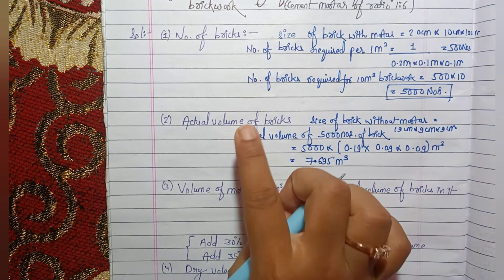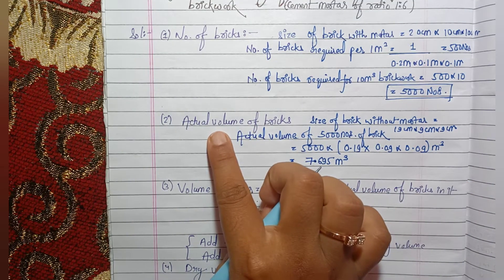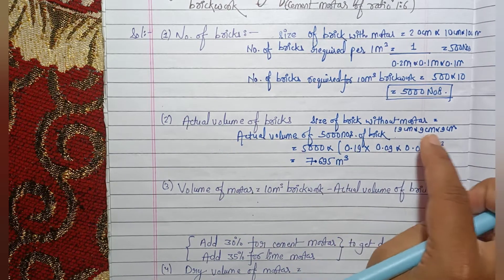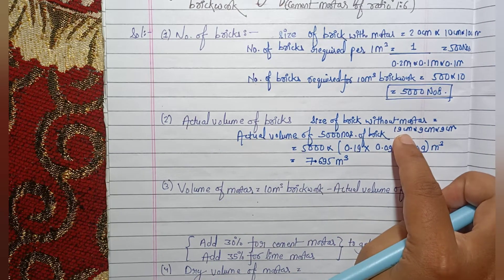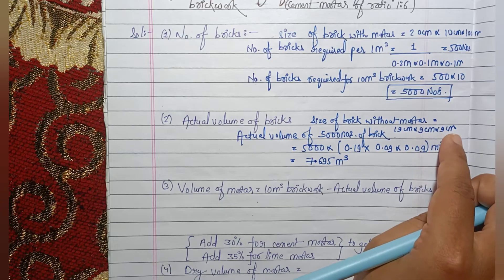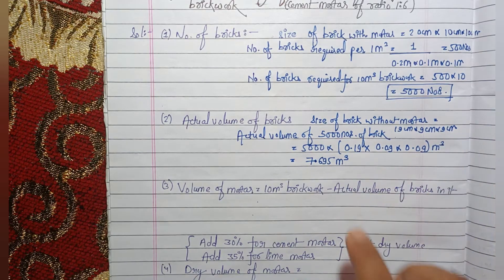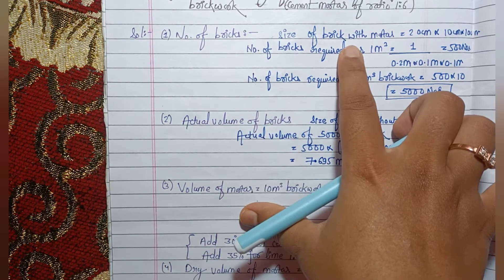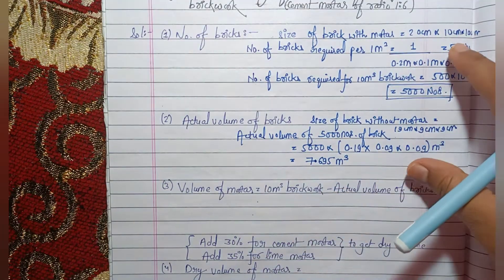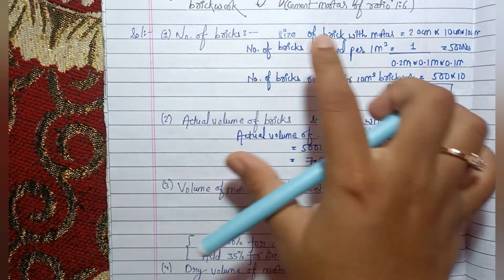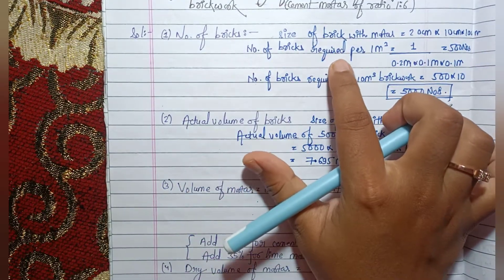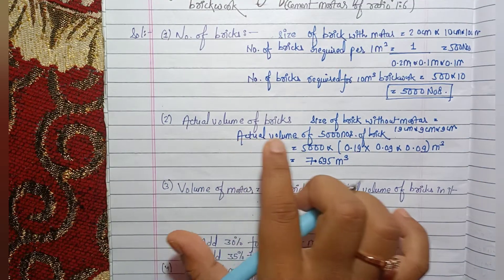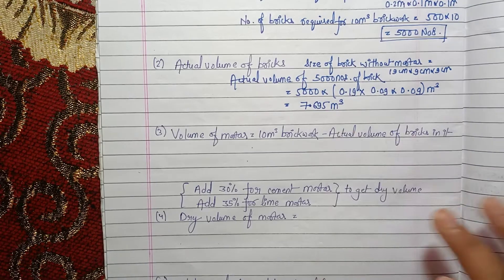Remember: when calculating the actual volume of brick, use the size without mortar — 19 cm × 9 cm × 9 cm. When calculating the number of bricks, use the size with mortar. This is the key difference between these two steps.